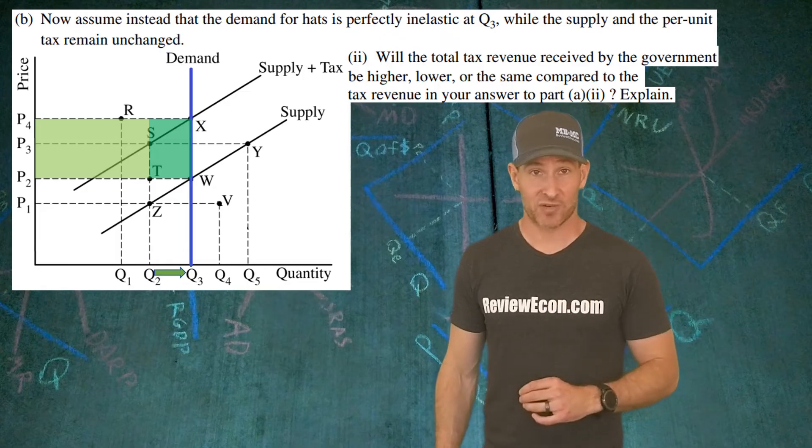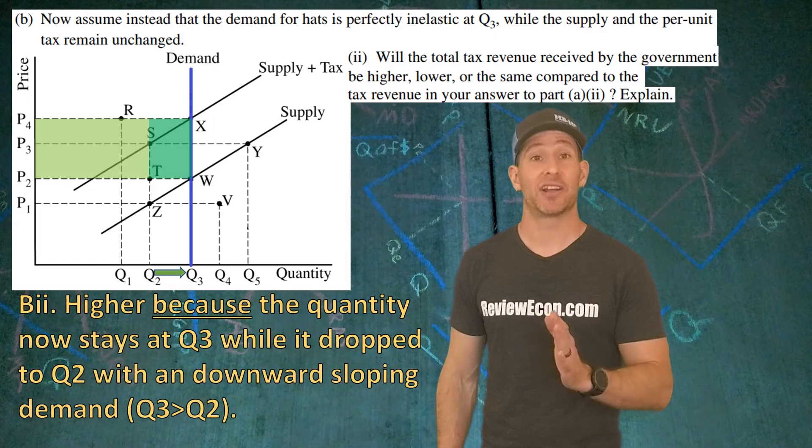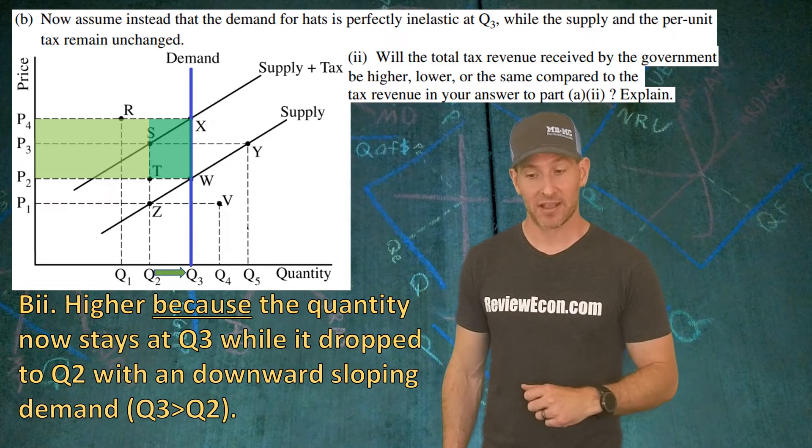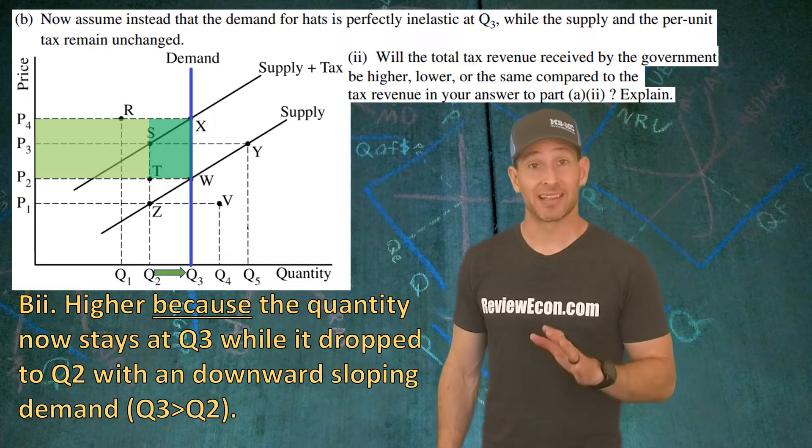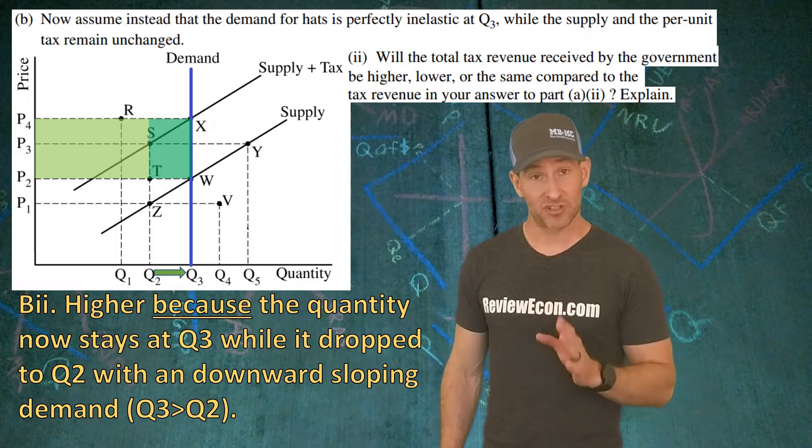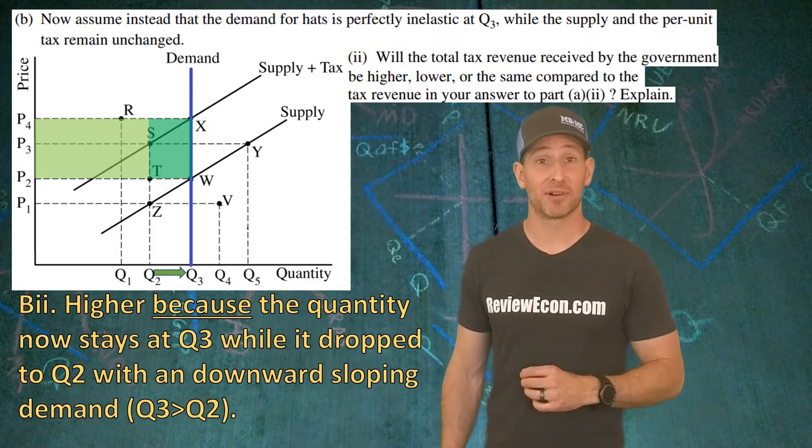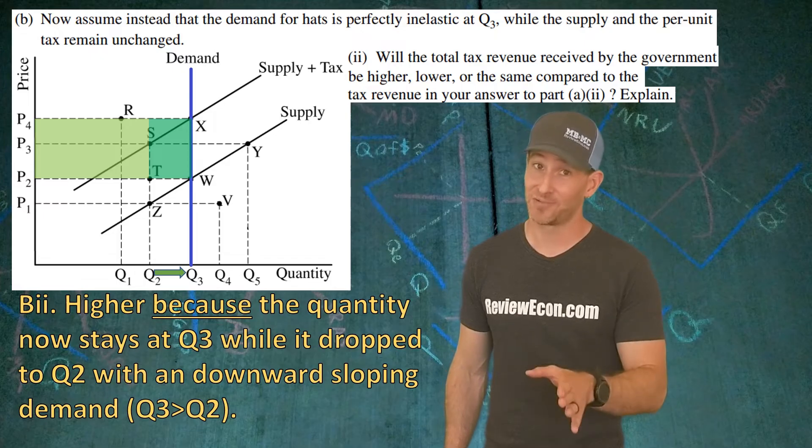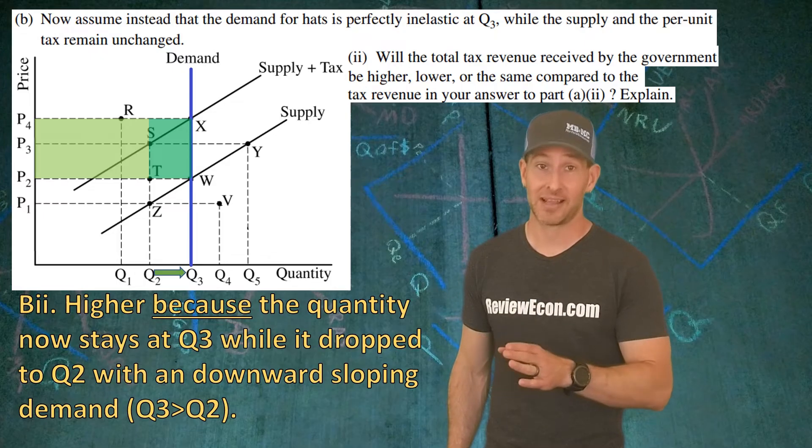So in order to answer this question, you simply say higher, because—and that's the explained portion you have to have here—the quantity does not drop like it does with a downward sloping demand curve. And if you show that, I suggest you use the numbers: Q3 is greater than Q2, and that's the reason why we get a higher tax revenue. You get your point.